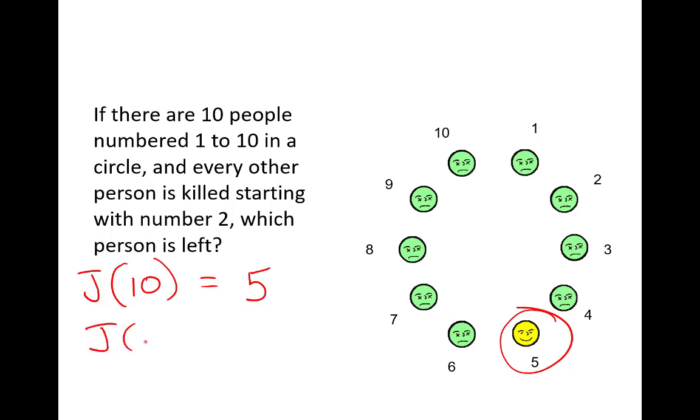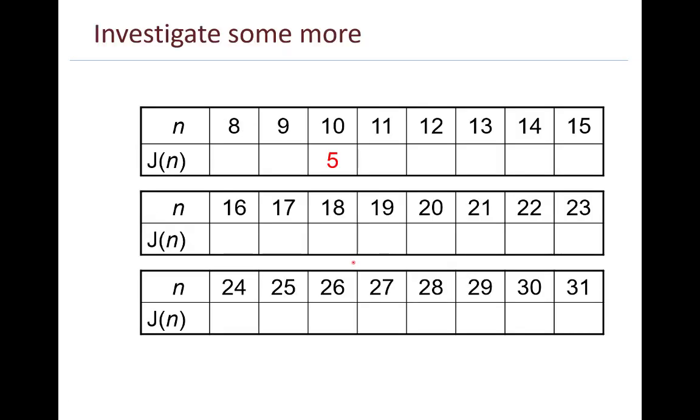We might ask ourselves, what if there had been eleven people to begin with? In that situation, who would be the last to go? Or twelve people, or seventy people? So we can have a chart here. And on the top row is the number of people that are in a circle initially. And in the second row we have the position of the person who remains. Do this for me. Figure out a few of these on your own. Maybe eight, nine, eleven, and twelve.